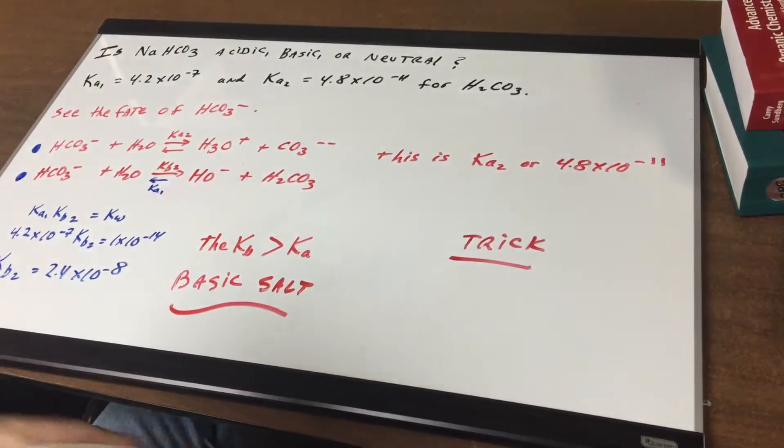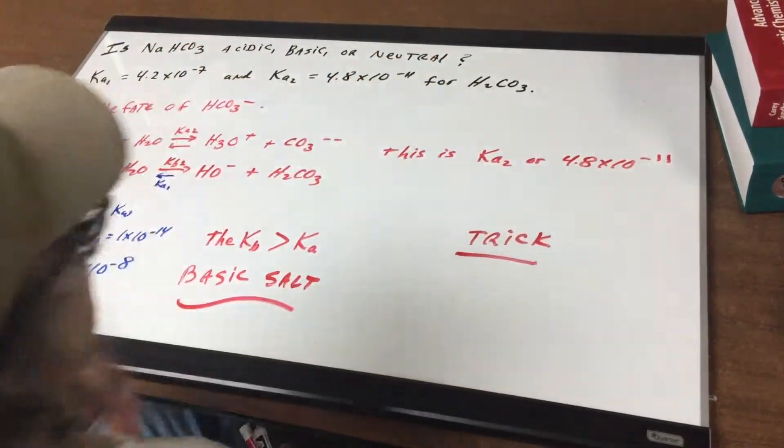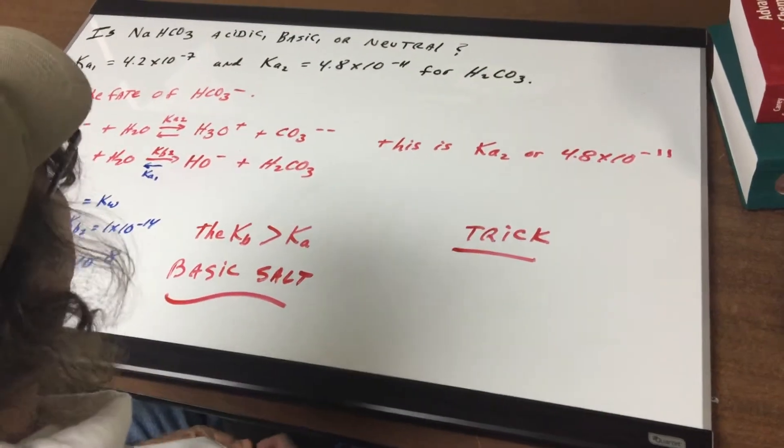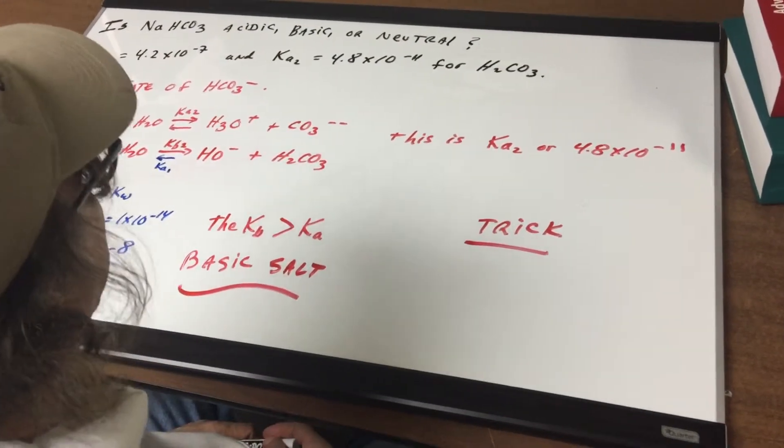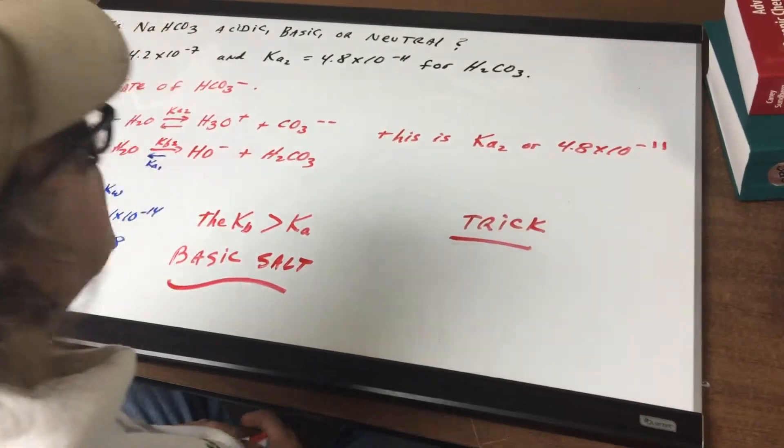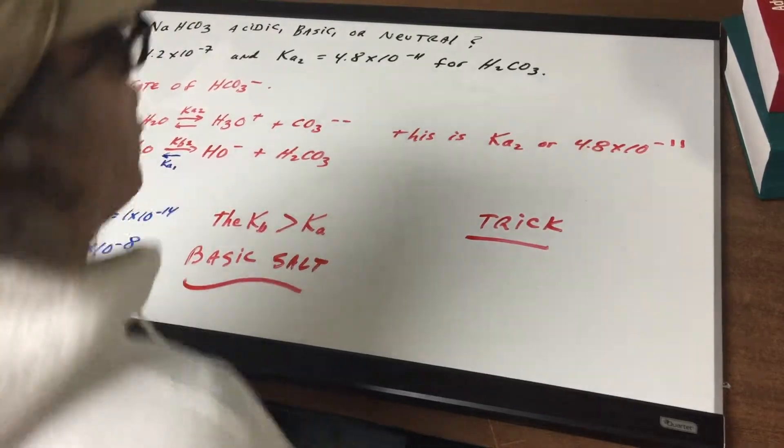What I do is I'm going to give you K values for the acid that this salt was made from, and I gave you Ka1 of 4.2 times 10^-7 and Ka2 of 4.8 times 10^-11. There's two Ka's because this is diprotic acid, carbonic acid.